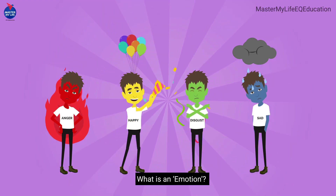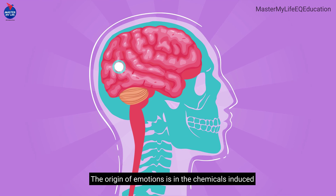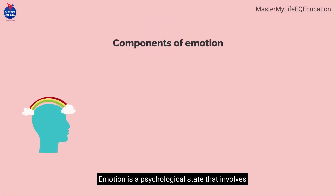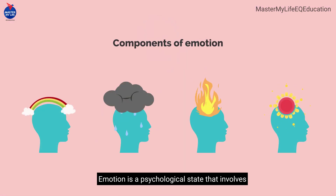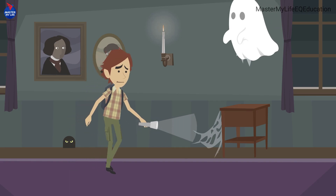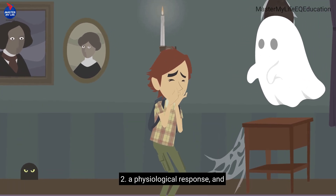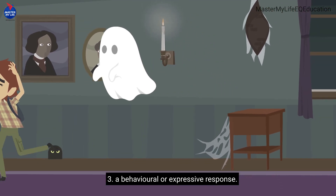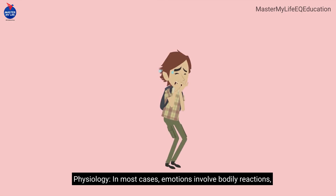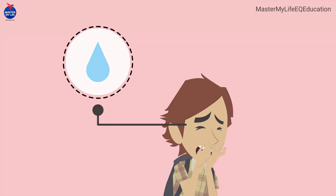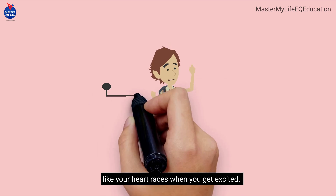What is an emotion? The origin of emotions is in the chemicals induced by the brain. Emotion is a psychological state that involves three distinct components: one, a subjective experience; two, a physiological response; and three, a behavioral or expressive response. In most cases, emotions involve bodily reactions — like your heart racing when you get excited.